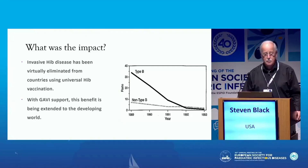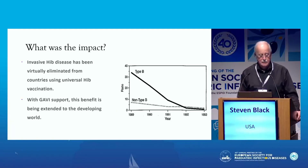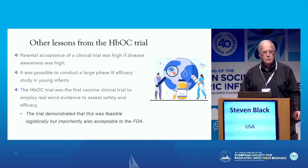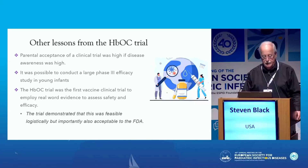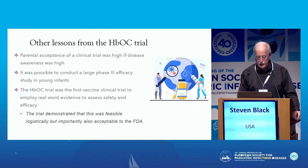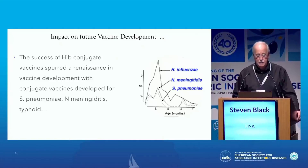The impact has been dramatic. We don't see Hib disease anymore. Residents never see epiglottitis, or only rarely, and then usually due to other organisms. Hib disease in young children has virtually disappeared, and this benefit has been extended to developing countries through GAVI funding. Other lessons from the HBOC trial were that parental acceptance for clinical trials in children was quite high, large phase three trials were feasible, and the trial was the first to employ real-world evidence to assess safety and efficacy — acceptable to regulatory agencies such as the FDA. The success of this vaccine also led to the development of other conjugates for Streptococcus pneumoniae, meningococcus, typhoid, and other diseases.